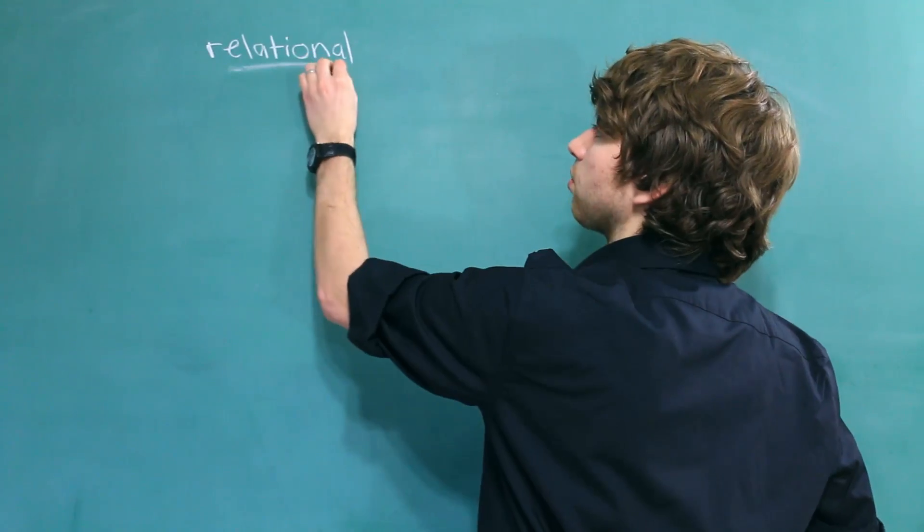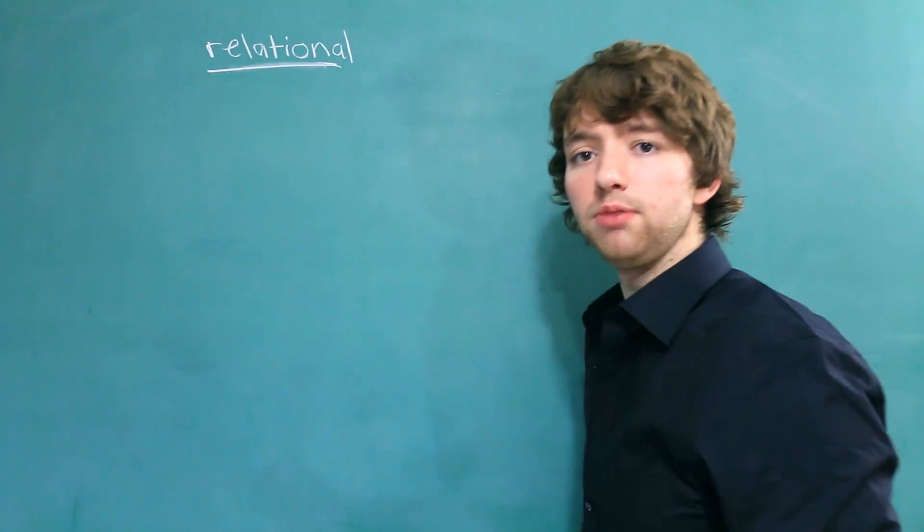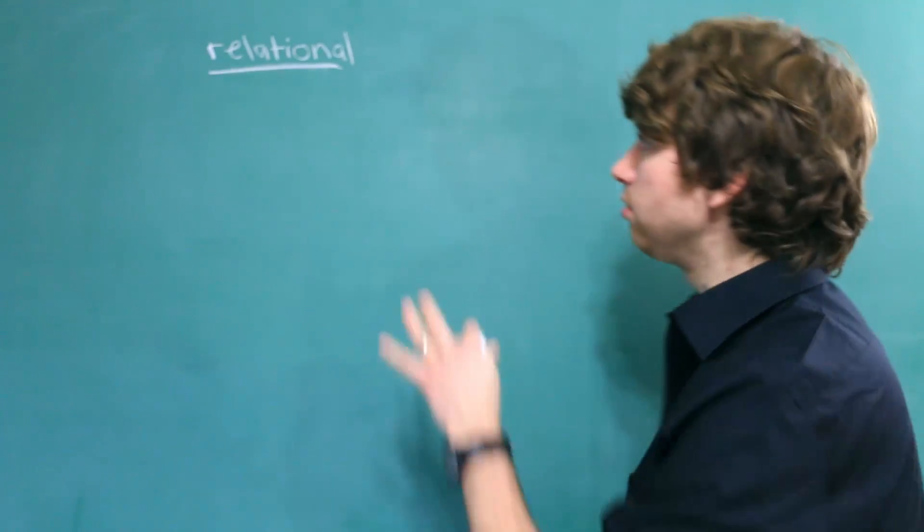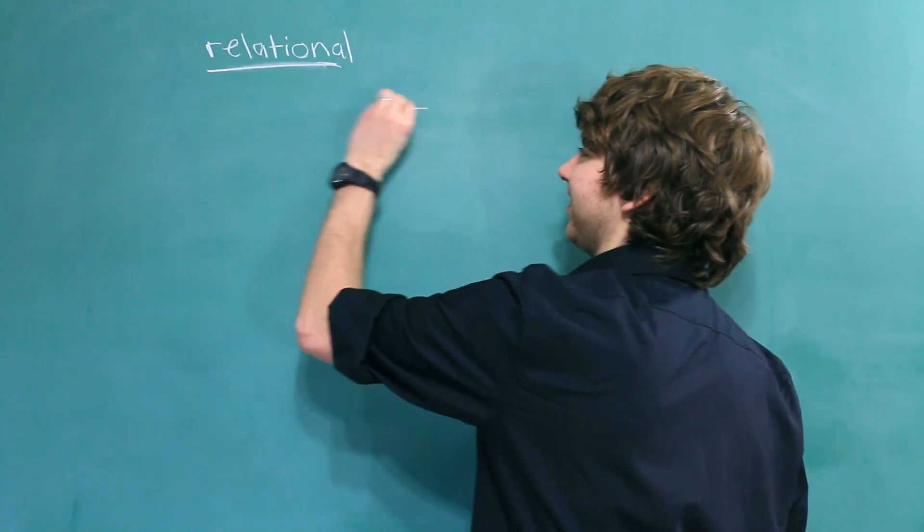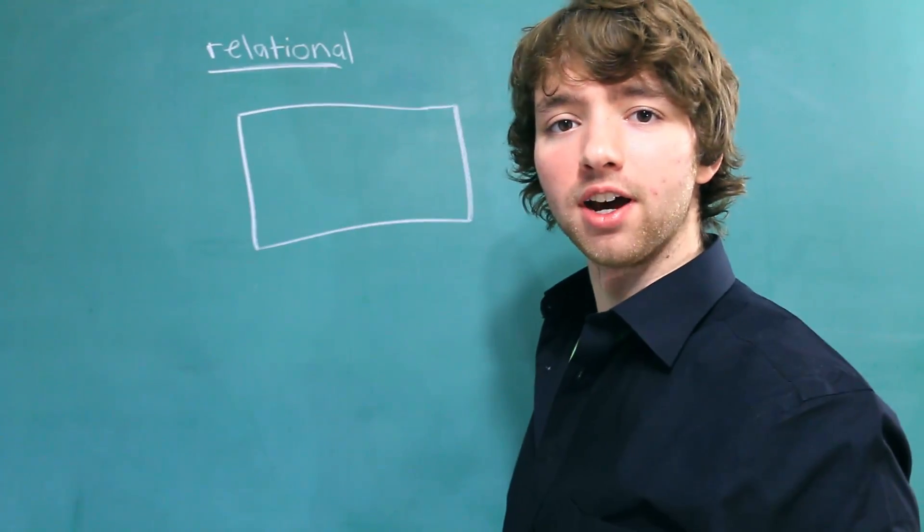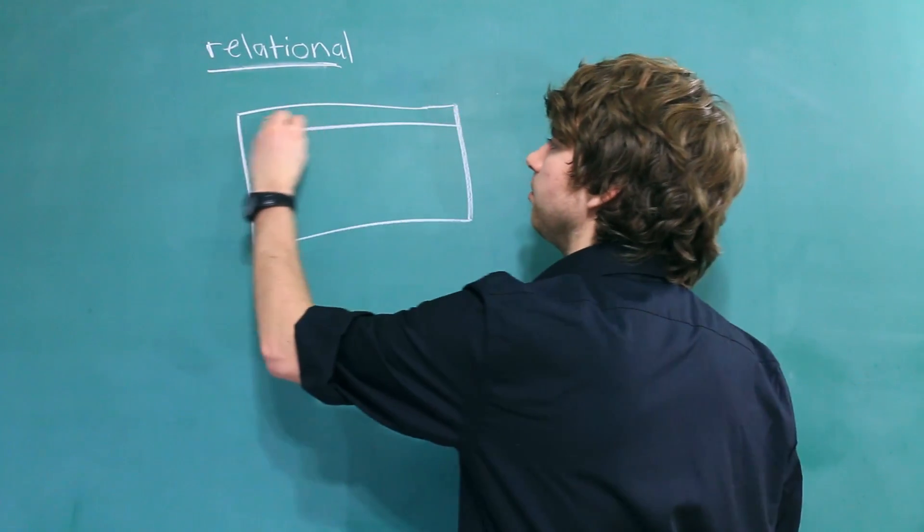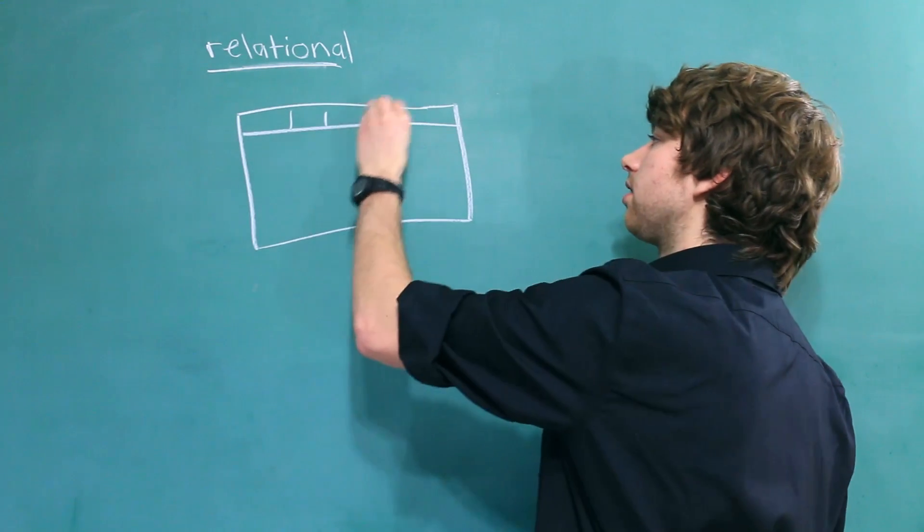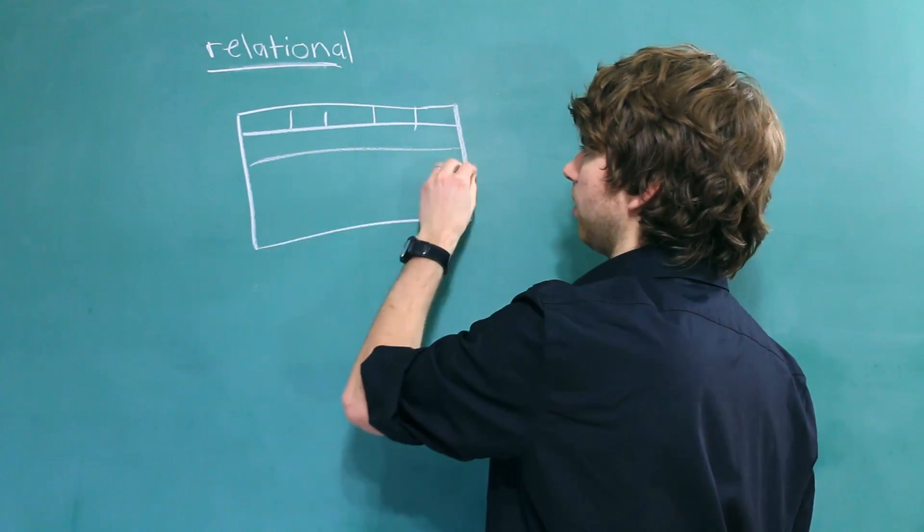Now the other part of relational database management system is the key word relational. And this word right here, relation, actually means table. You can use that at a party and impress all your friends. Okay. So we have a table. And the way things are organized is that we have columns going this way, and then we have rows of information going this way.